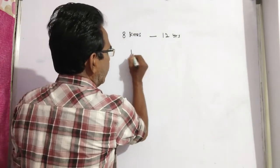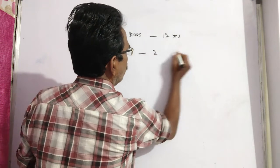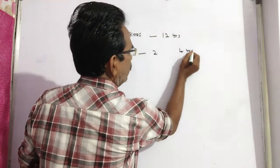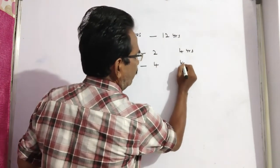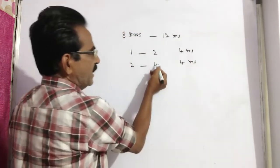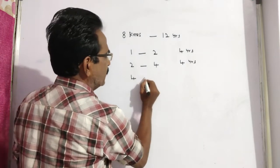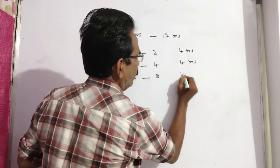See, 1 rupee becomes 2 in 4 years. Again, this 2 becomes 4 in another 4 years, and this 4 becomes 8 in another 4 years.